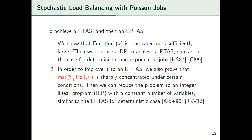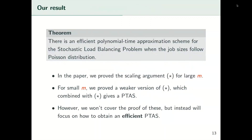Now my co-author Huan Li will present the rest of our work. Hello, I'm Huan Li. As my co-author Hossam has pointed out, the main result of this paper is an efficient PTAS for load balancing Poisson jobs. We proved a scaling argument star for large m, and for small m a weaker version, which combined with star already gives a PTAS. However, we won't cover the proof of these arguments, but instead focus on how to obtain an efficient PTAS given these arguments.